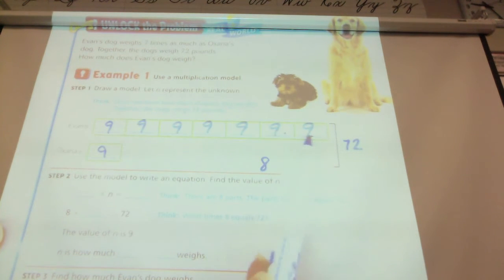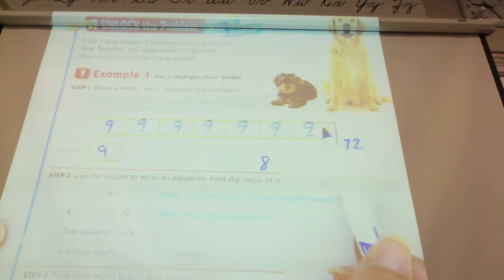If I put 9 in all of those boxes, does that equal 72? Let's see. 1, 2, 3, 4, 5, 6, 7, 8 times 9. Does that equal 72? Yes.